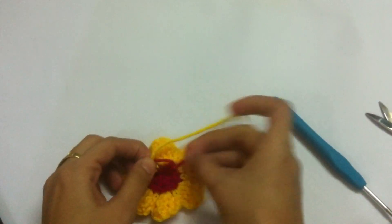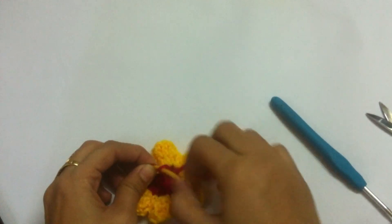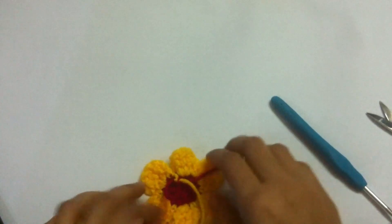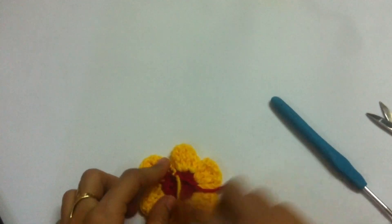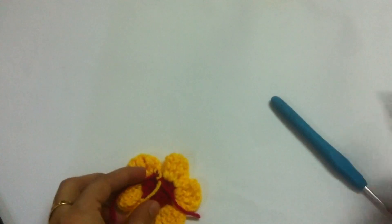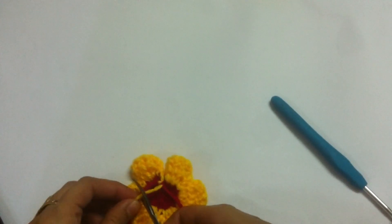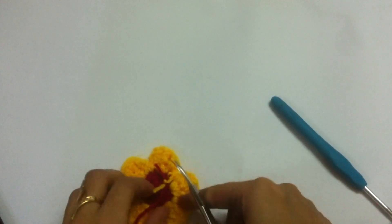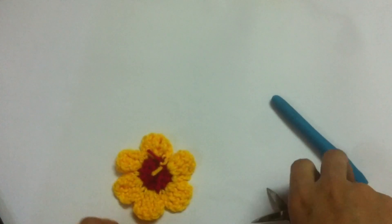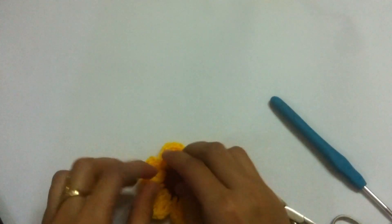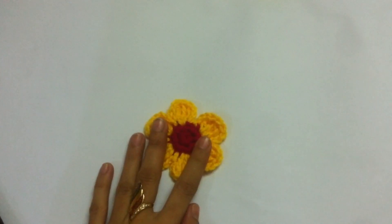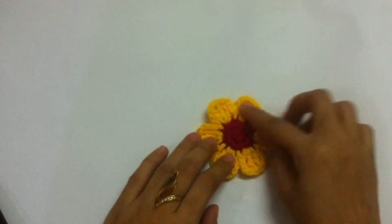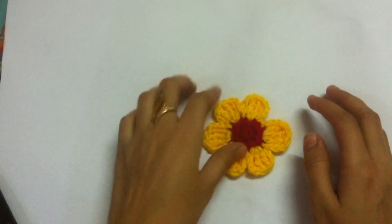Tie a knot over here also so that it's secured. Now you simply have to weave your ends. If you are not weaving, you can simply cut them. Because whenever you have to applique on something, this is the wrong side, so these tails won't be visible. And this is our right side.